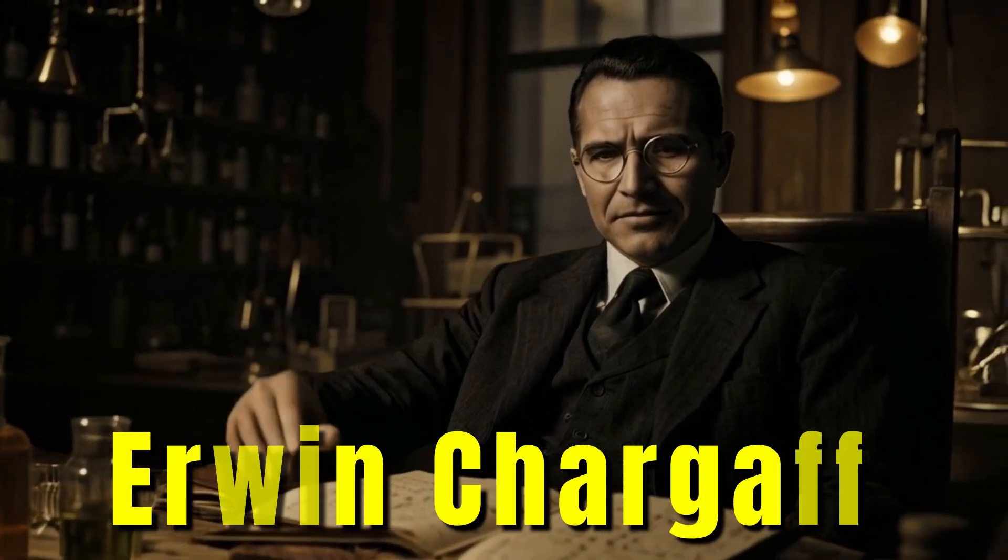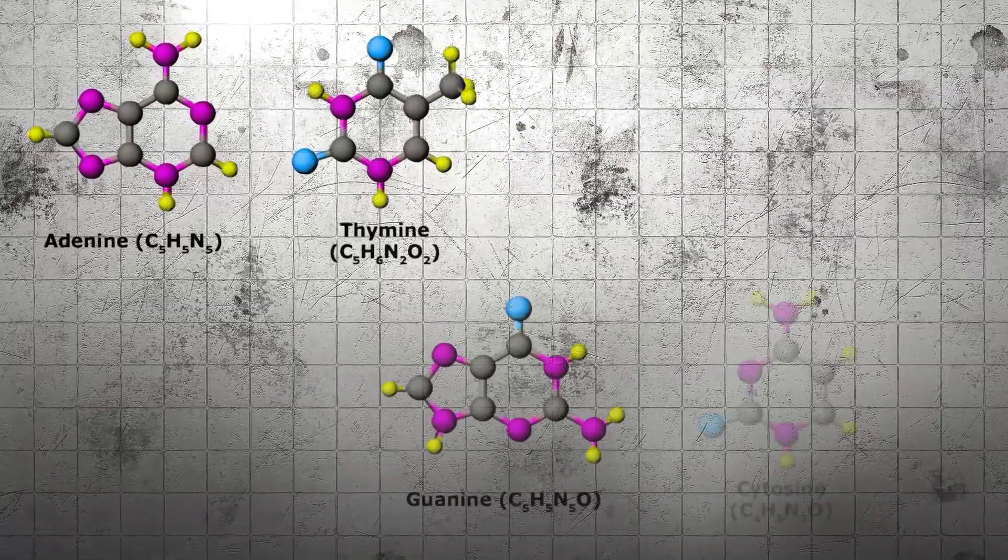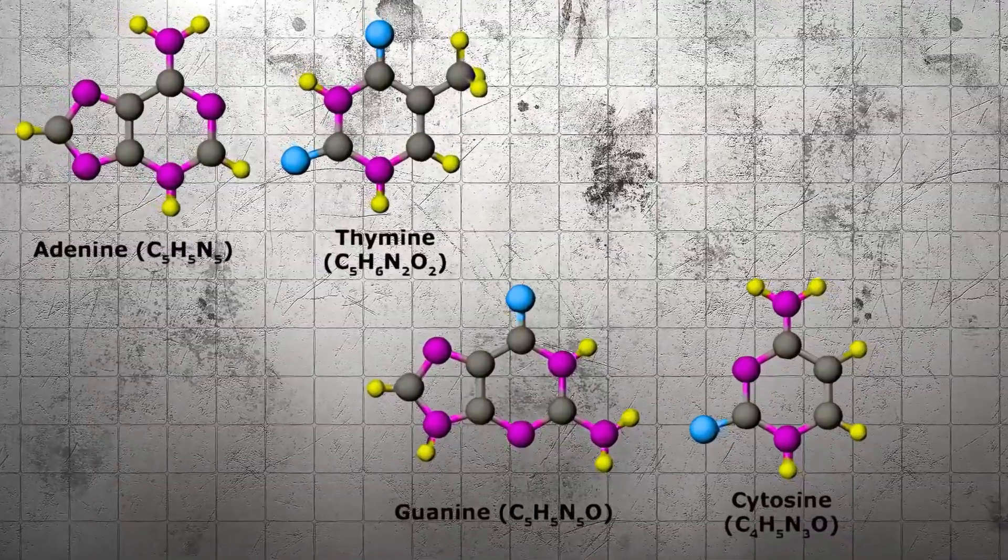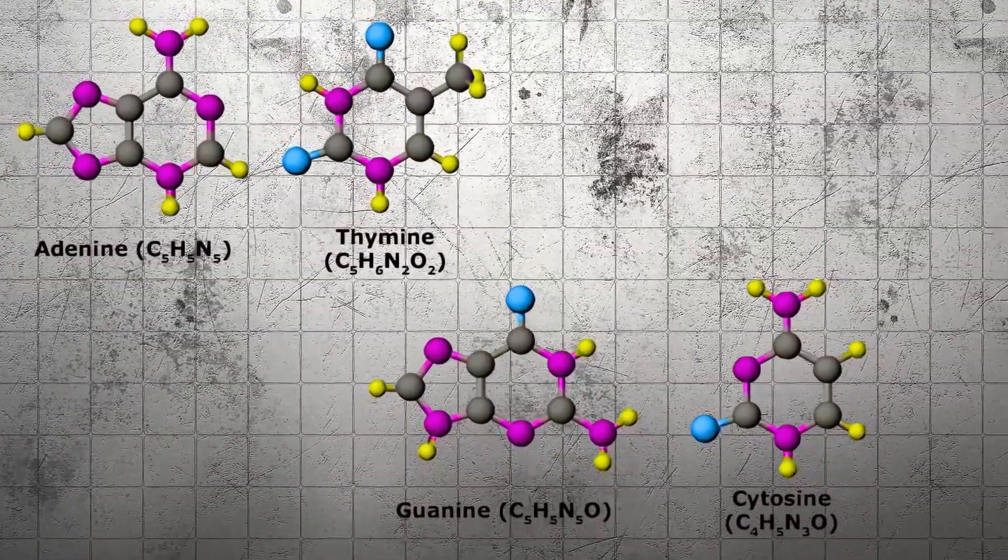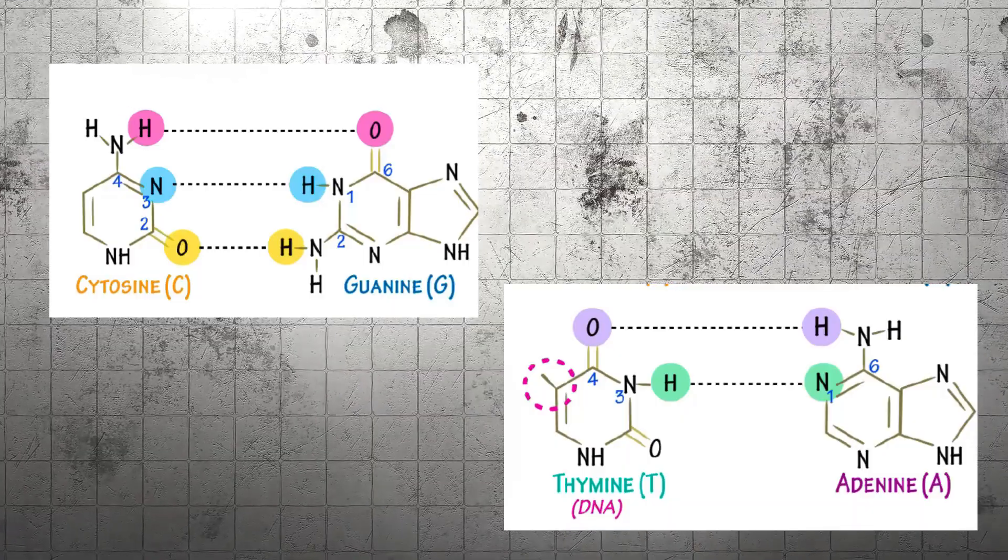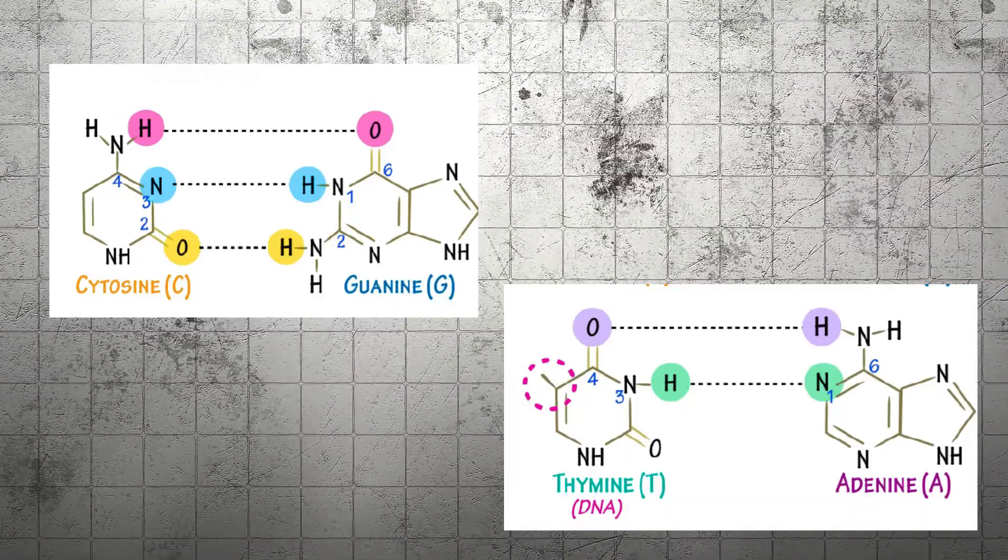Around the same time, Erwin Chargaff uncovered a vital clue. He found that DNA always contained equal amounts of adenine and thymine, and equal amounts of guanine and cytosine. These simple ratios hinted that the bases might pair together. It was a puzzle piece waiting for the right mind to solve.